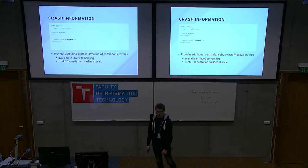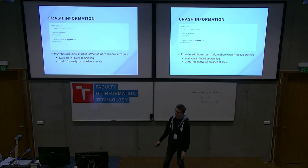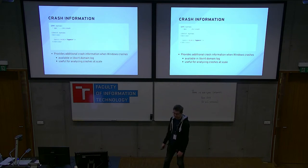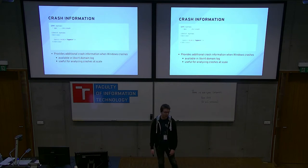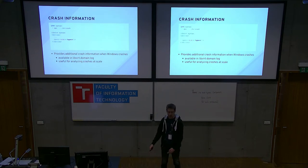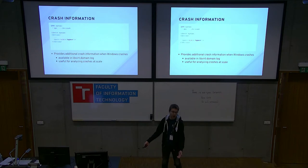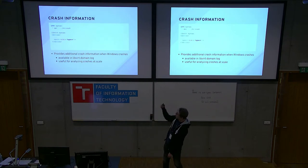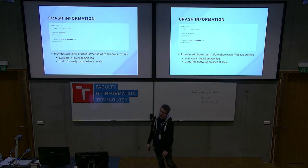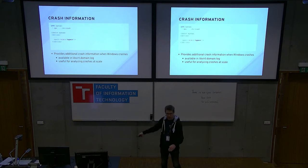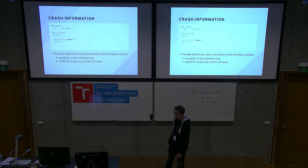Crash information: your Windows guests crash sometimes and you see the blue screen of death — still blue after so many years. When running at larger scale with hundreds of guests on hundreds of nodes, you may want to analyze these crashes to see if they're the same or different. Windows can report where it crashed — the exact instruction pointer — so you can compare crashes. This is enabled with the hv-crash parameter, and you can retrieve the data from QEMU via API or see it in your libvirt log, including the instruction pointer and basic registers.